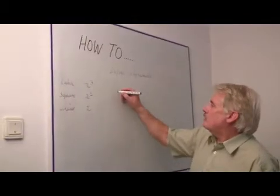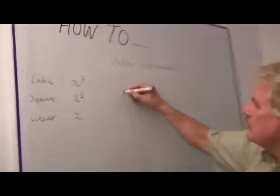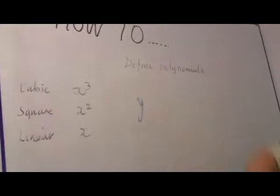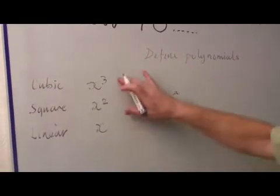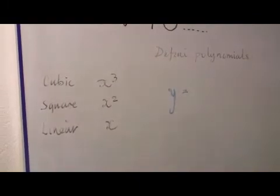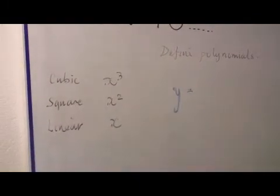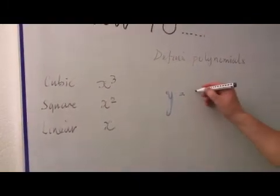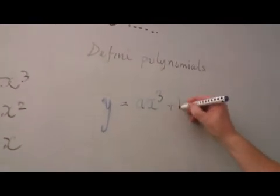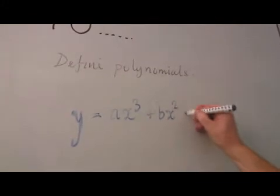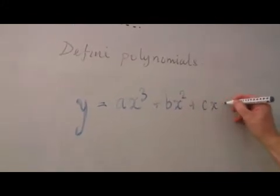Now, in any equation you have a subject of the equation, which may be something like y. So y is equal to some combination of various different terms. We could call it ax cubed plus bx squared plus cx plus d.